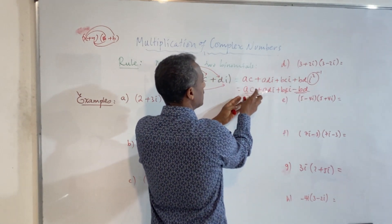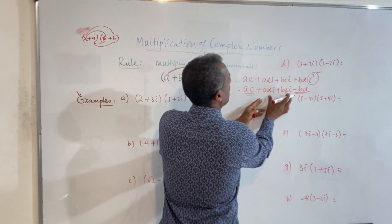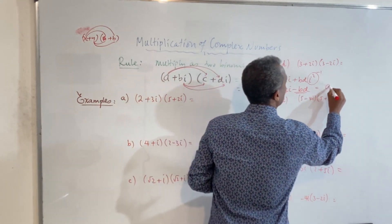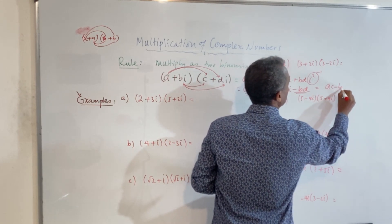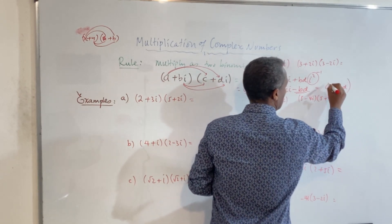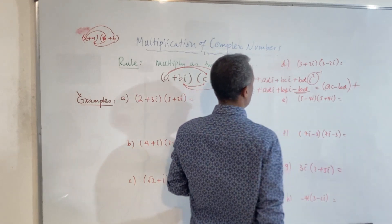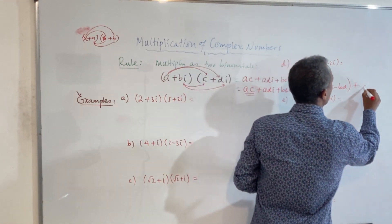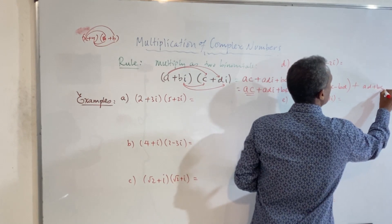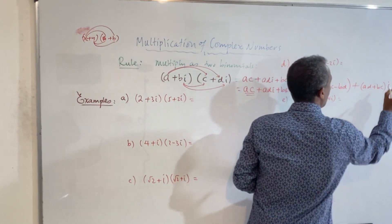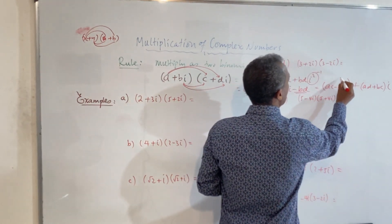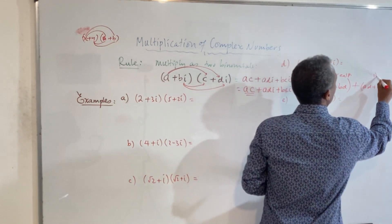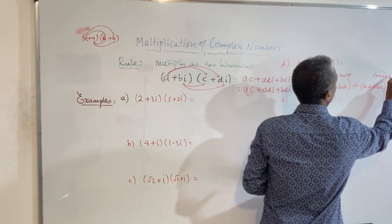We collect the real parts together and the imaginary parts together: AC minus BD, plus (AD plus BC)i. This is our real part and this is our imaginary part.